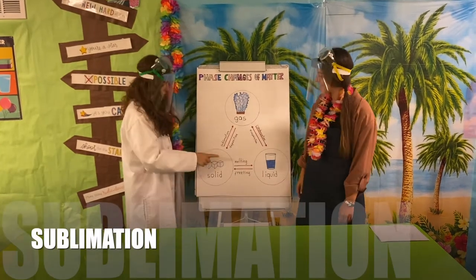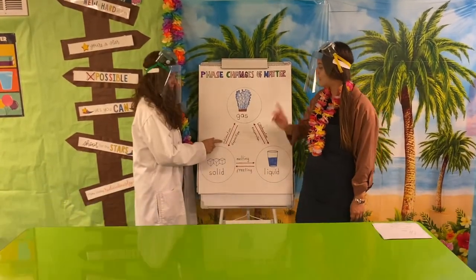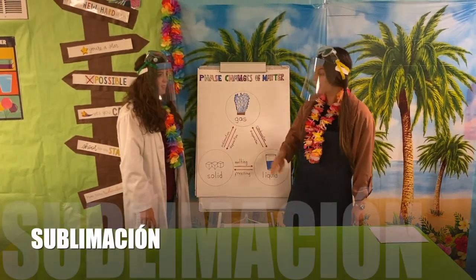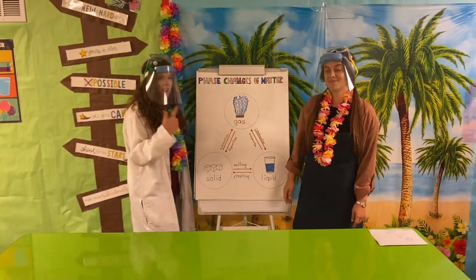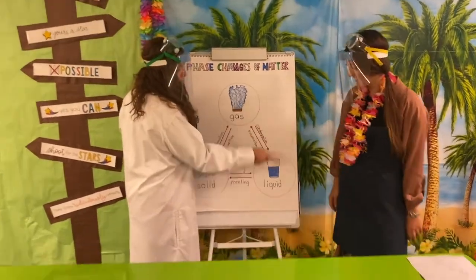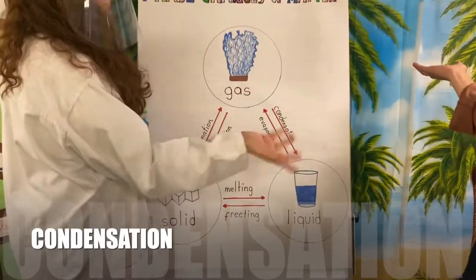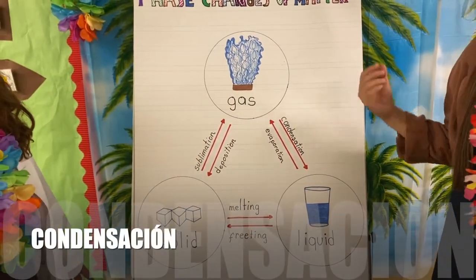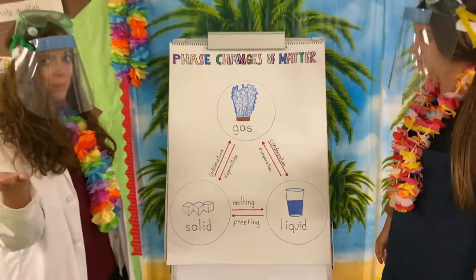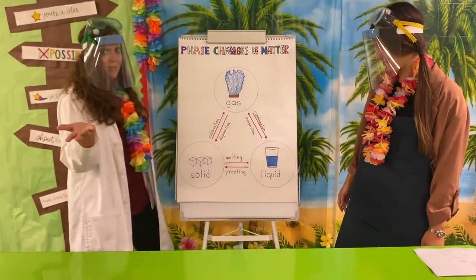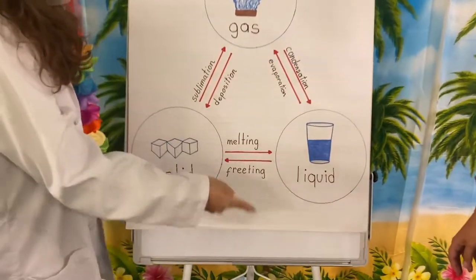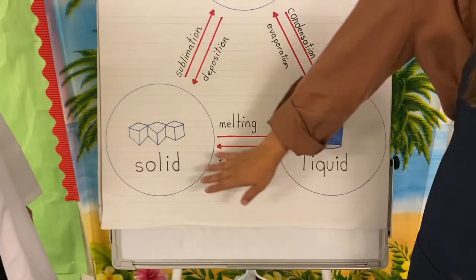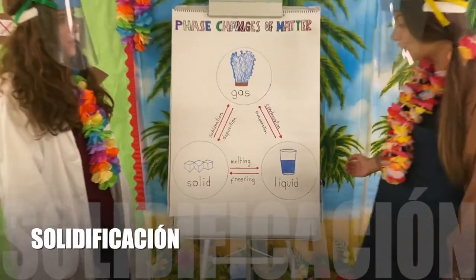When we pass from solid to gas, we call sublimation. Cuando pasamos de un sólido a un gas, a ese proceso le llamamos sublimación. And what happened when we pass from gas to liquid? We call condensation. Cuando pasamos de gas líquido a líquido, le llamamos condensación. And what happened with the last step, liquid to solid? So let's see. Y cuando pasamos de líquido a sólido, le llamamos solidificación.